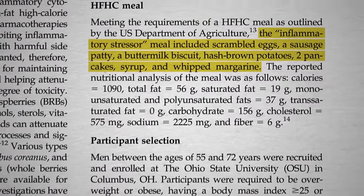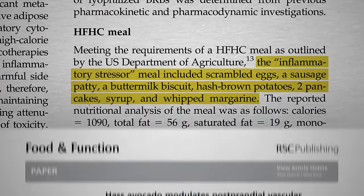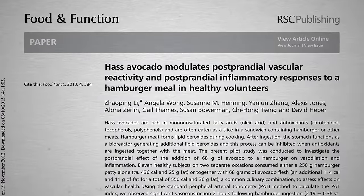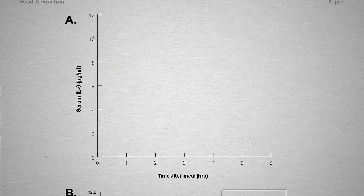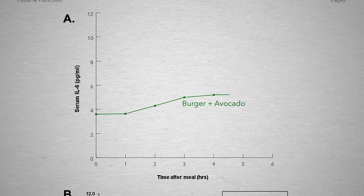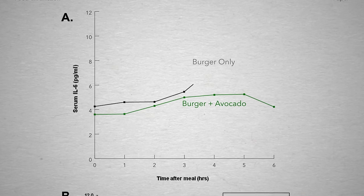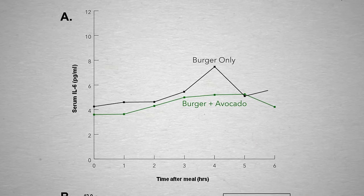So a whole plant food source of sugar can decrease inflammation in response to an inflammatory stressor meal. What about a whole plant food source of fat? If you eat a burger with half an avocado on top, within hours the level of an inflammatory biomarker goes up in your blood, but not as high as eating the burger without the avocado.